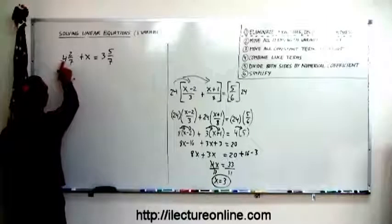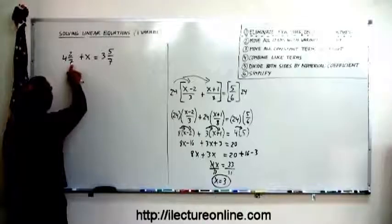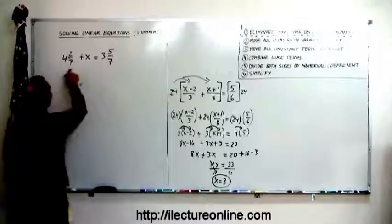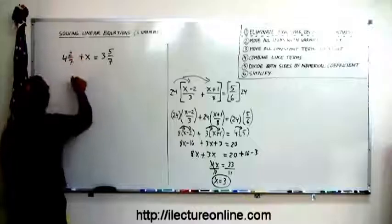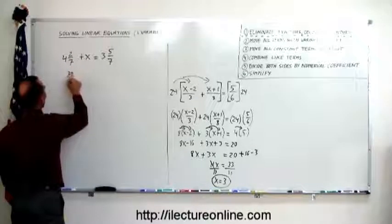You multiply the 4 times the denominator, 7, and add that to the 2 on top. So 4 times 7 is 28 plus 2 is 30, so this can be written as 30 over 7.